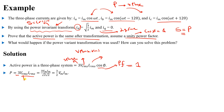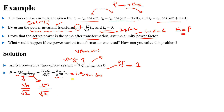We know that Vrms = Vmax / √2 and Irms = Imax / √2 for sinusoidal or cosine waves. Substituting: P = 3 × (Vmax / √2) × (Imax / √2) = 3/2 × Vmax × Imax, which equals 1.5 × Vmax × Imax. This is the real active power in the three-phase system.